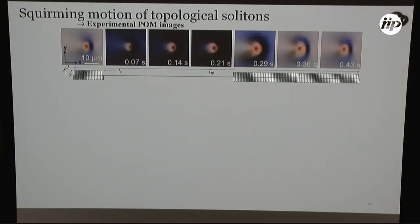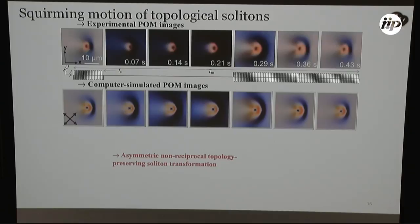So, where is all of this motion coming from? If we look at POM images, experimental images, of a single soliton as we're turning this field on and off, we can see that we have this morphing that we've observed before, but it's asymmetric. When the field is turned off, it looks different from when the field is turned on. And we can reproduce these kinds of textures by taking our numerically simulated images and running them through a Jones matrix method, where we can simulate the POM images that we would get with those results. And we see that we have the same interesting nonreciprocal morphing.